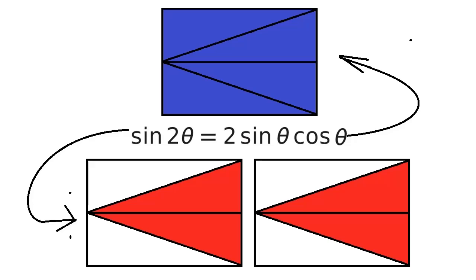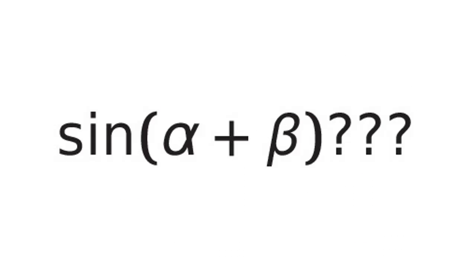Therefore, the sine of two theta equals two times the sine of theta times the cosine of theta. Now, can you generalize this method into the angle sum identity? Post your solutions in the comments.